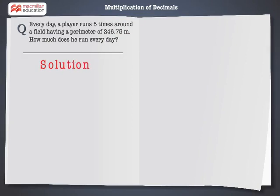Let's solve the problem. It is given that the perimeter of the field is 246.75 meters and the number of rounds he takes is equal to 5.